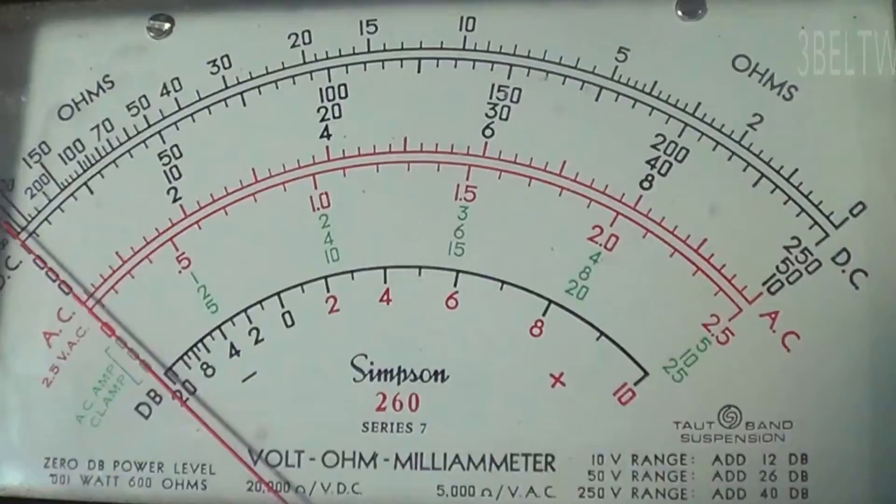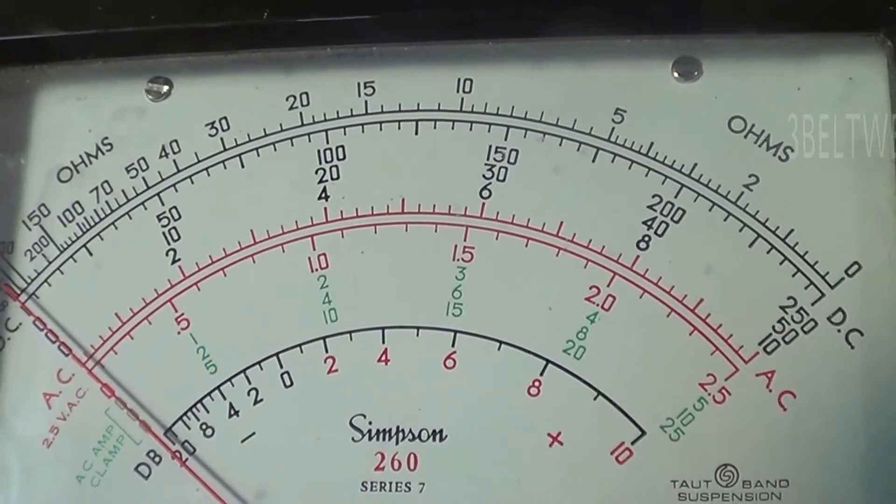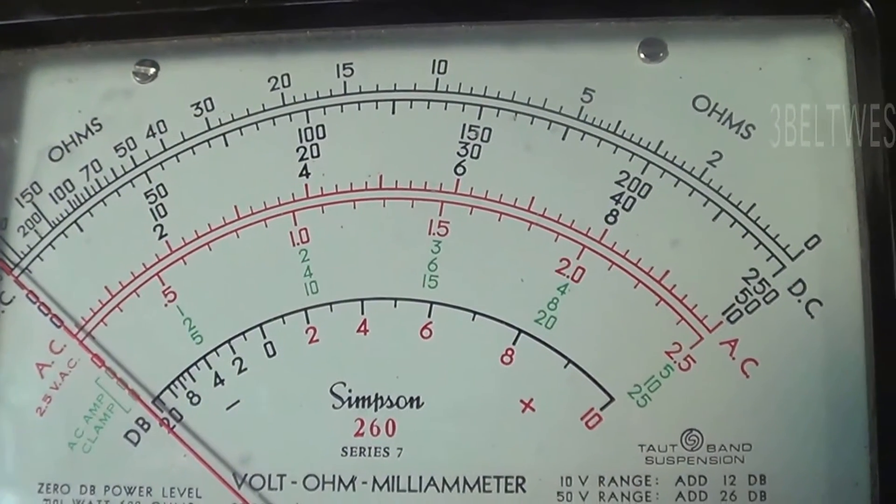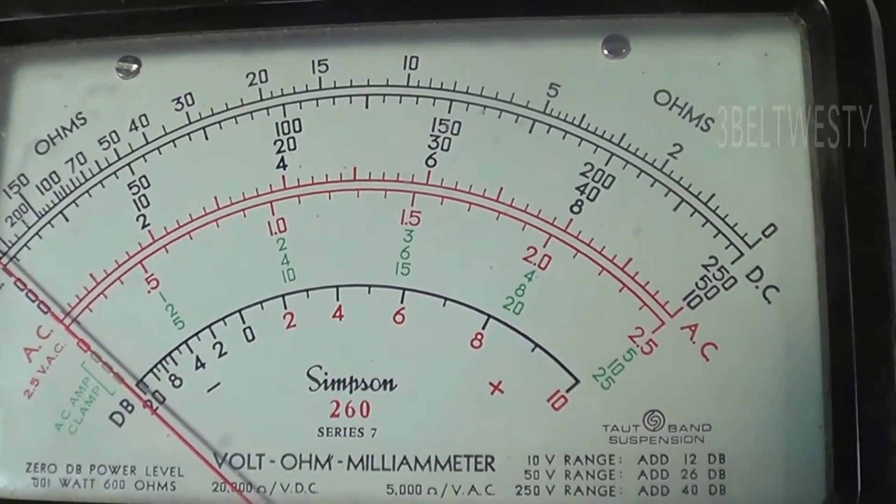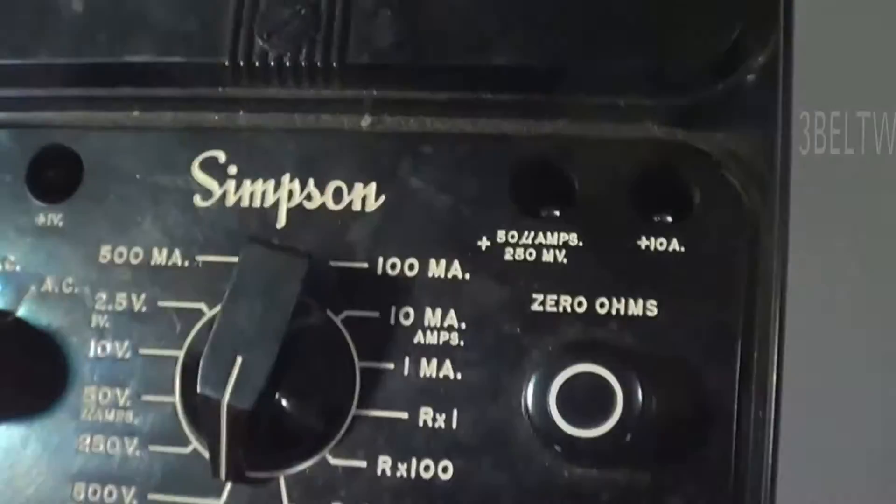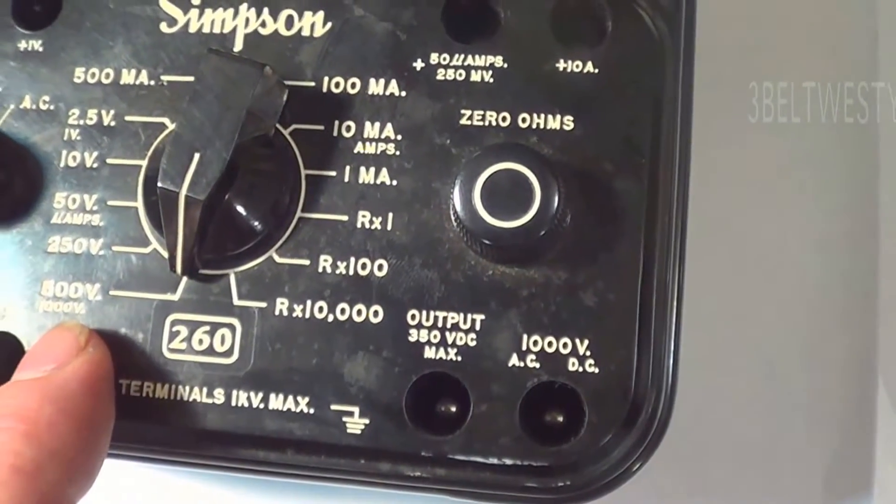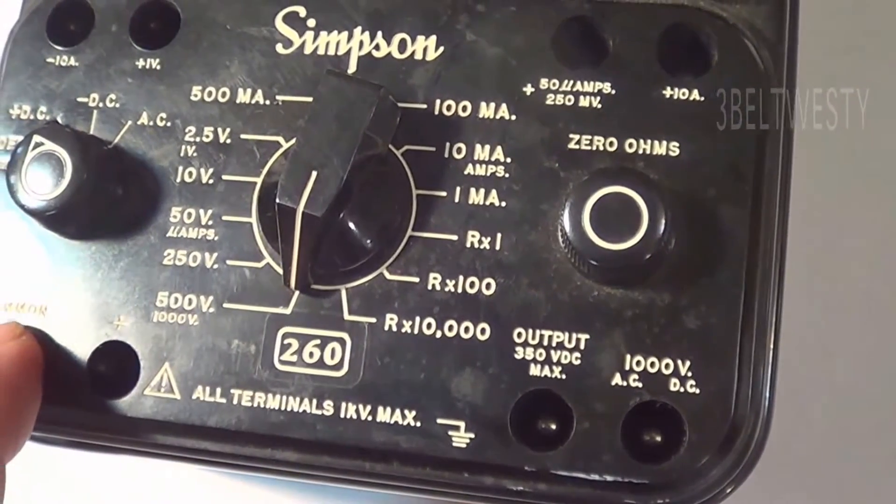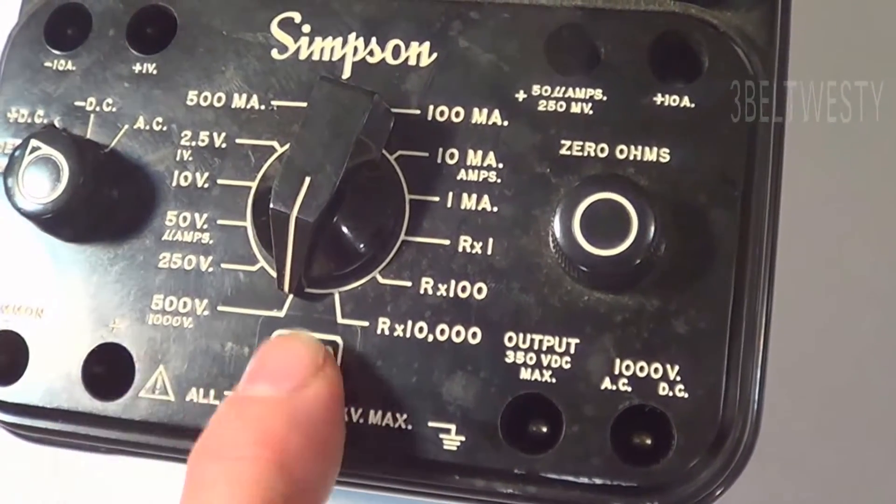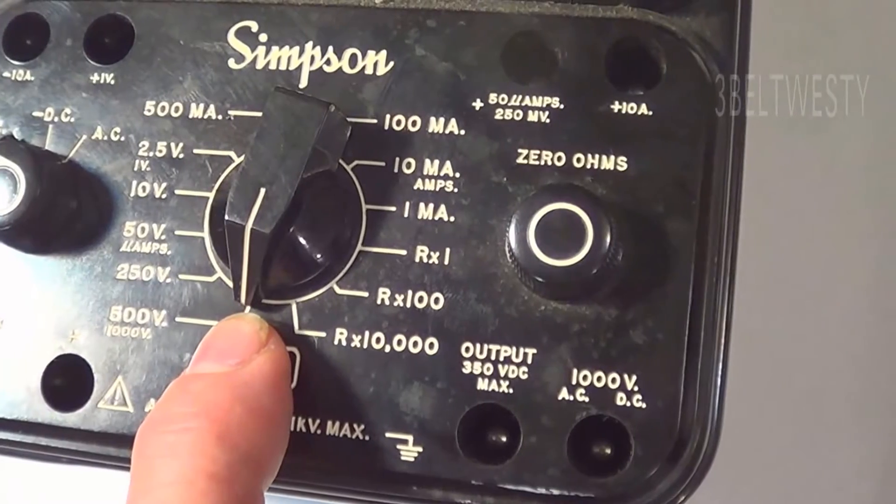So the point of this video, okay, this is a Simpson 260 series 7 that has a problem in the thousand volt setting. This particular model, there's 500 volts between common and the positive, the 500 volt setting.